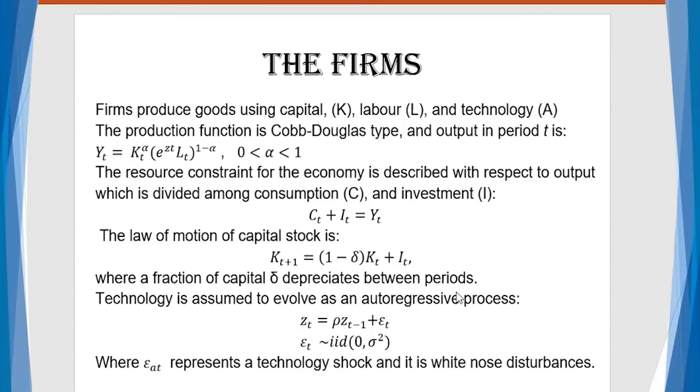Technology is assumed to evolve as an autoregressive process. Z_t is rho Z_{t-1} plus epsilon. Epsilon is the representation for the technology shock, and it is white noise disturbances.